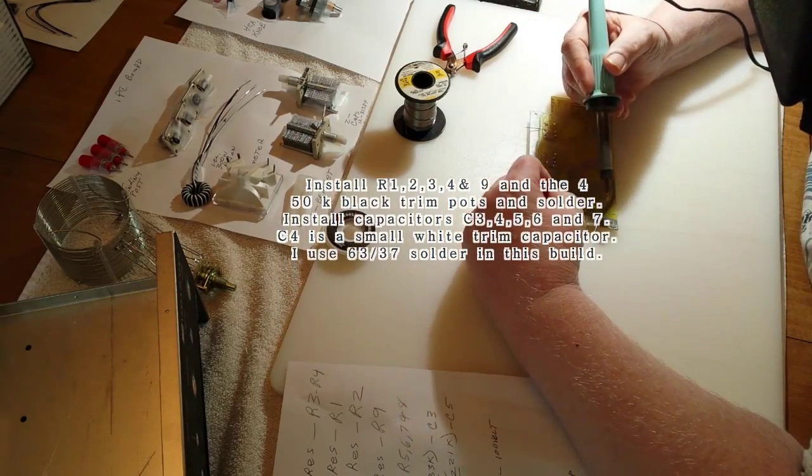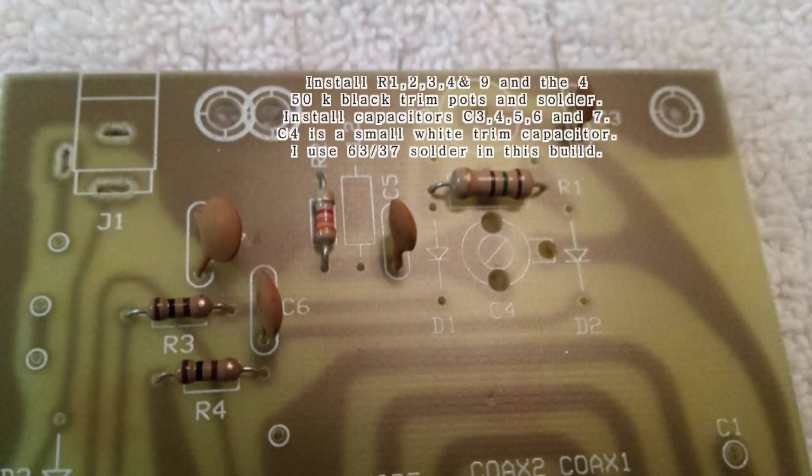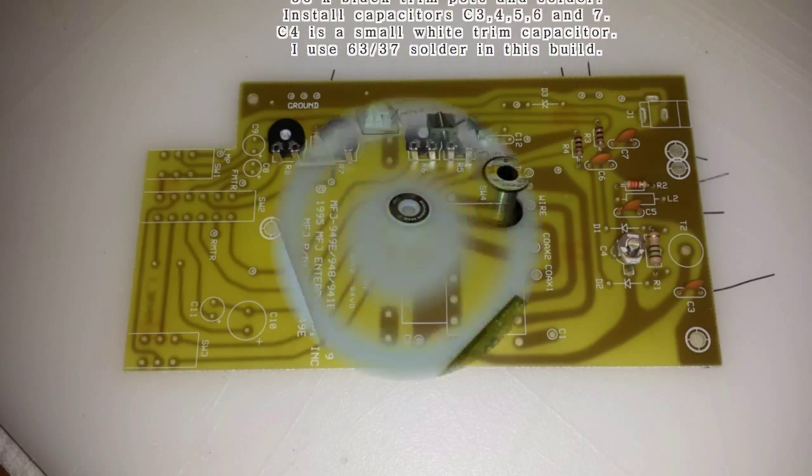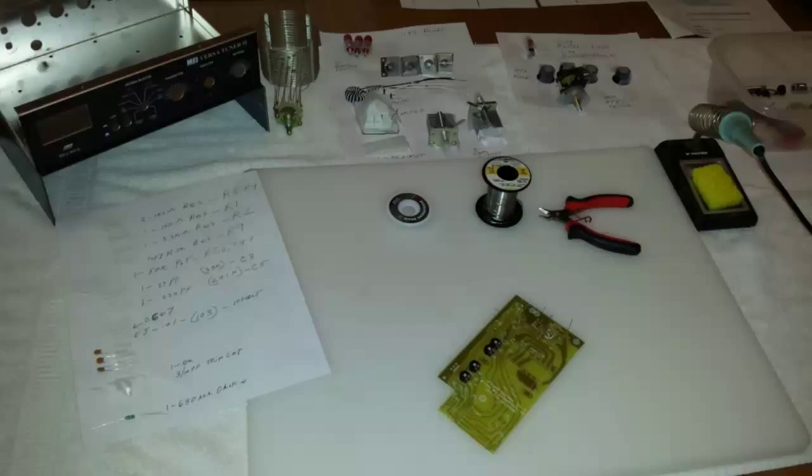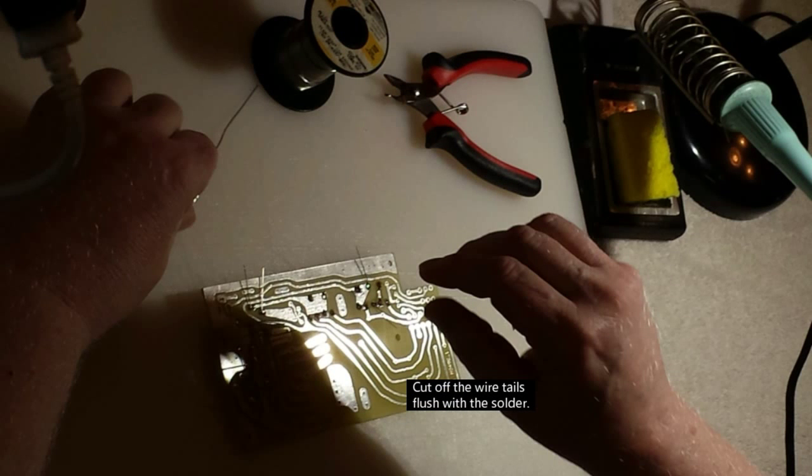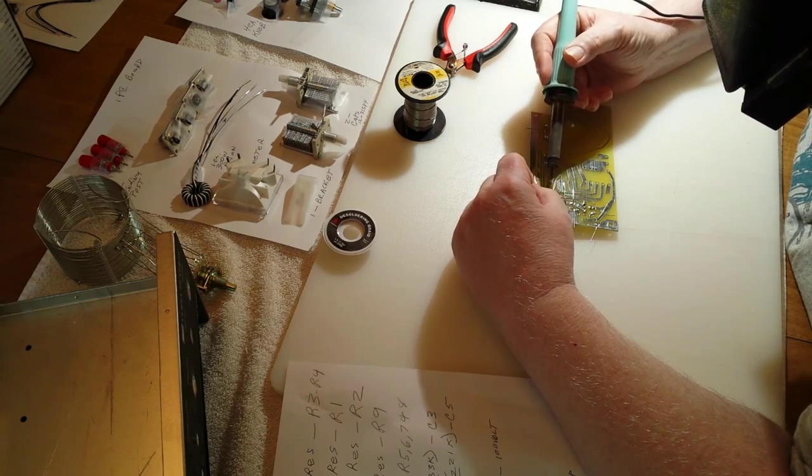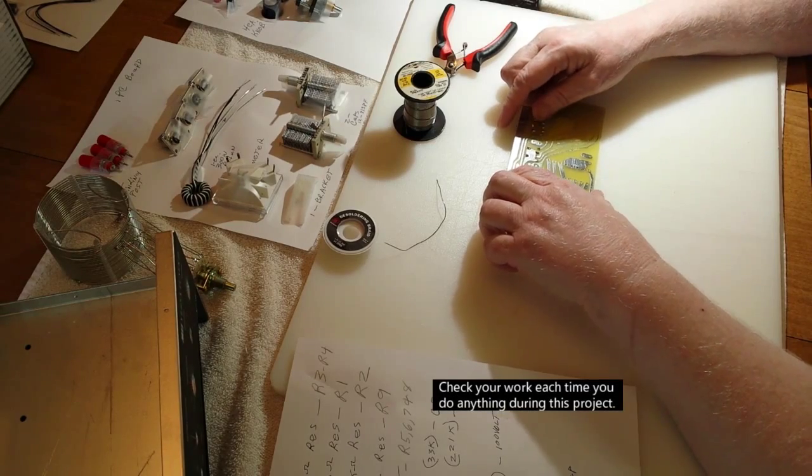We're looking at page 7 and 8 of the manual, installing those parts. Notice I'm using a pair of flush cutters. They come with a pair of needle nose from Walmart, Radio Shack, and different other places. The pair of flush cutting nippers like these is what you want to use. You always want to go back and check all your work through this whole build.